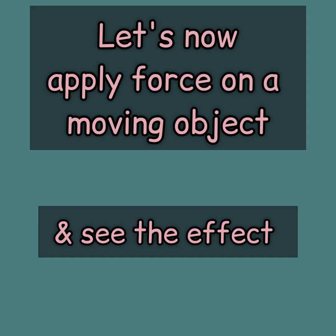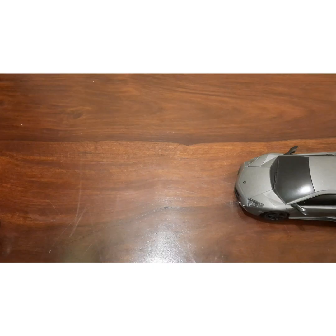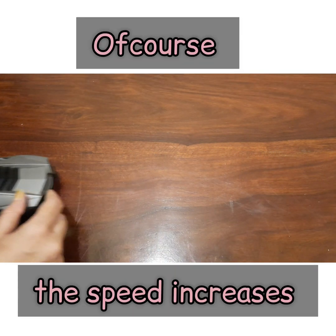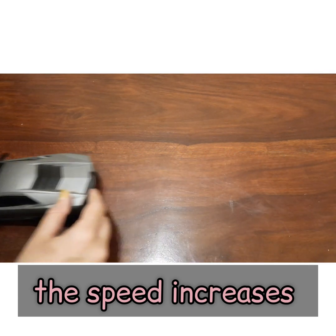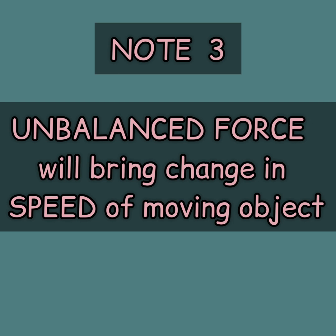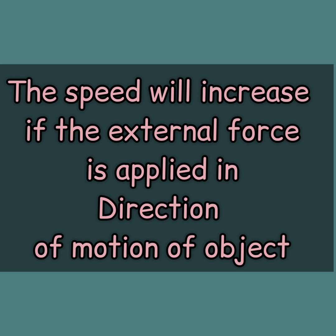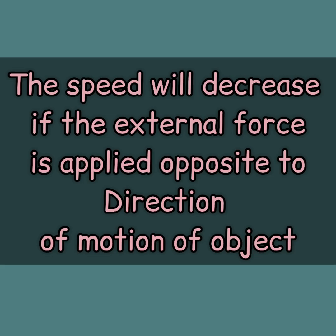Let's now apply force on a moving object and see what happens. Observe what happens to the speed of this car when I start pushing it — of course, you can see that the speed increases. When an unbalanced force acts on an object, the speed of the moving object changes. In this case, F2 is greater than F1. The speed will increase if external force is applied in the direction of motion of the object, but the speed will decrease if this external force is applied in the direction opposite to the motion of the object.